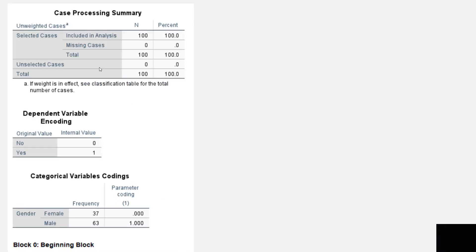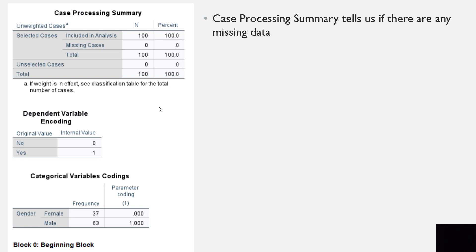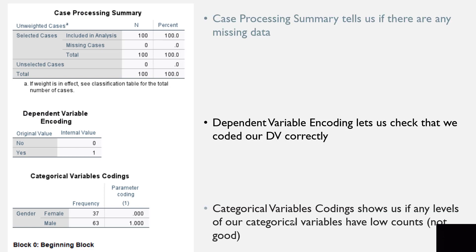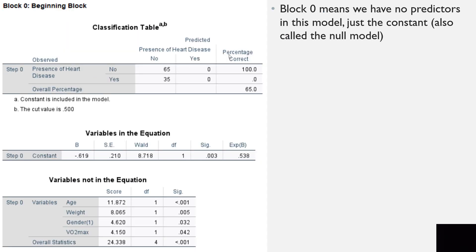Going back to the top of the output: the Case Processing Summary tells us if there are any missing data — we have none. The Dependent Variable Encoding lets us check that the dependent variable is coded correctly. The Categorical Variables Coding shows if any levels of categorical variables have low counts, which is not good. Here we have more than 15 in each category, so that is acceptable.